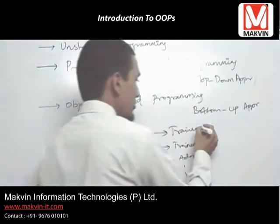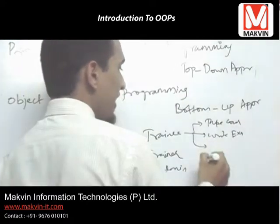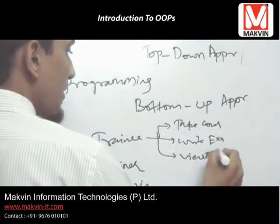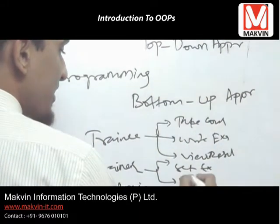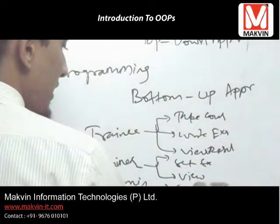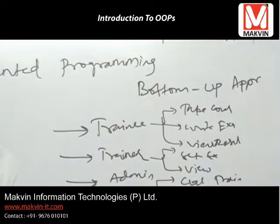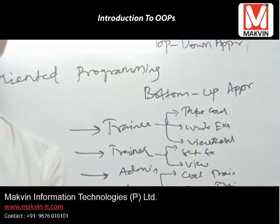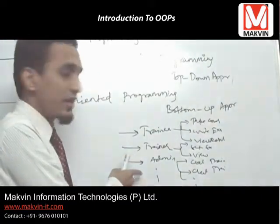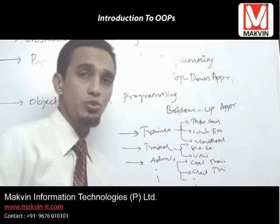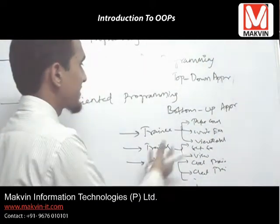Now I will see what a trainee can do. A trainee can take a course, write the exam, and view results. In the same way, what can a trainer do? A trainer can set the exam and view results. What can an admin do? Admin can create a trainee, create a trainer, and so on. In this programming methodology, we are very much interested in who is doing the task, then what is the task. We first found out who the users are, then what each user can do. So we are moving towards the solution from bottom to top — that is why it is called a bottom-up approach.